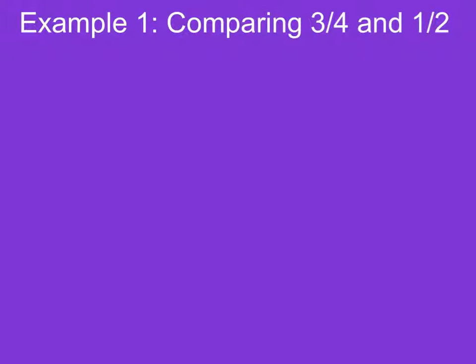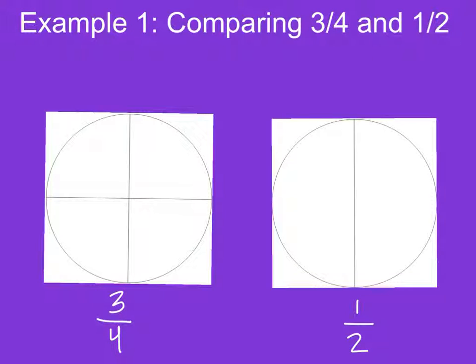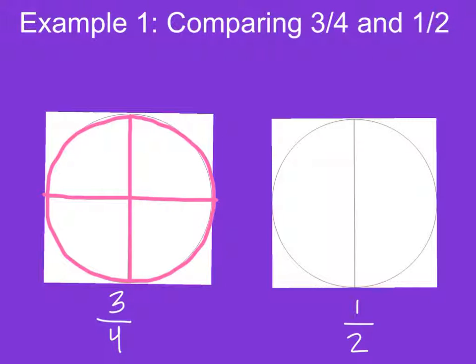The first step is to draw a picture. The three-fourths circle is divided up into four sections, with three of the sections shaded in, because three-fourths represents three parts of the whole.